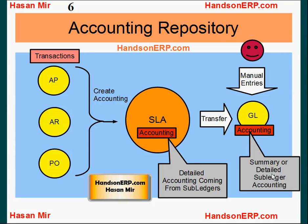One line for $50 debit or 50 lines of $1 debit each makes no difference for the balances — the balance will still be $50 debit for that account for that period. The difference is that the general ledger module will have summarized information while subledger accounting module will have the detailed accounting information. You may decide to have your GL in summary mode or in detail mode, depending on your requirements.